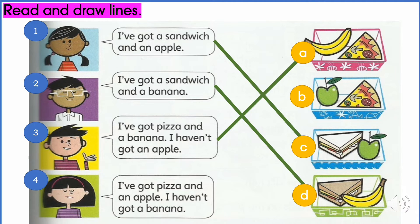Next one. The last question. I've got pizza and an apple. I haven't got a banana. So the answer is very obvious here. It's B. Very well. Let's move on to the next exercise.